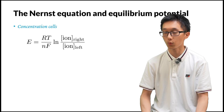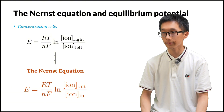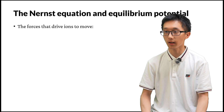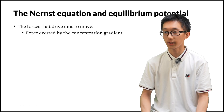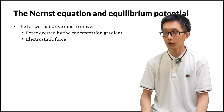By analogy, if we think of one side of the membrane as one electrode and the other side as the other electrode, we can get the Nernst equation, where we have the concentration of ions outside the cell over the concentration of ions inside the cell. The Nernst equation describes two forces that drive ions to move across the membrane: the force exerted by the concentration gradient — the tendency for ions to flow from higher to lower concentration — and the electrostatic force, where particles of the same charge repel and particles of different charges attract. The Nernst equation describes the relationship between concentration and equilibrium potential.